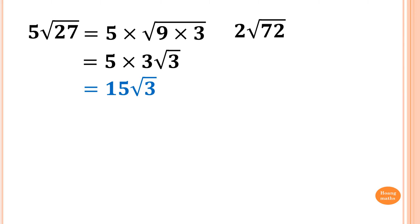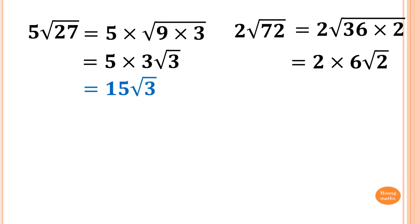Alright, move on: 2√72. So 72 — some of you might just divide by 2, or if you know the answer straight away: 72 is 36 times 2. So which is 2 times √(36 × 2), which is 2 times 6√2, because the square root of 36 is 6. So the answer is 12√2.